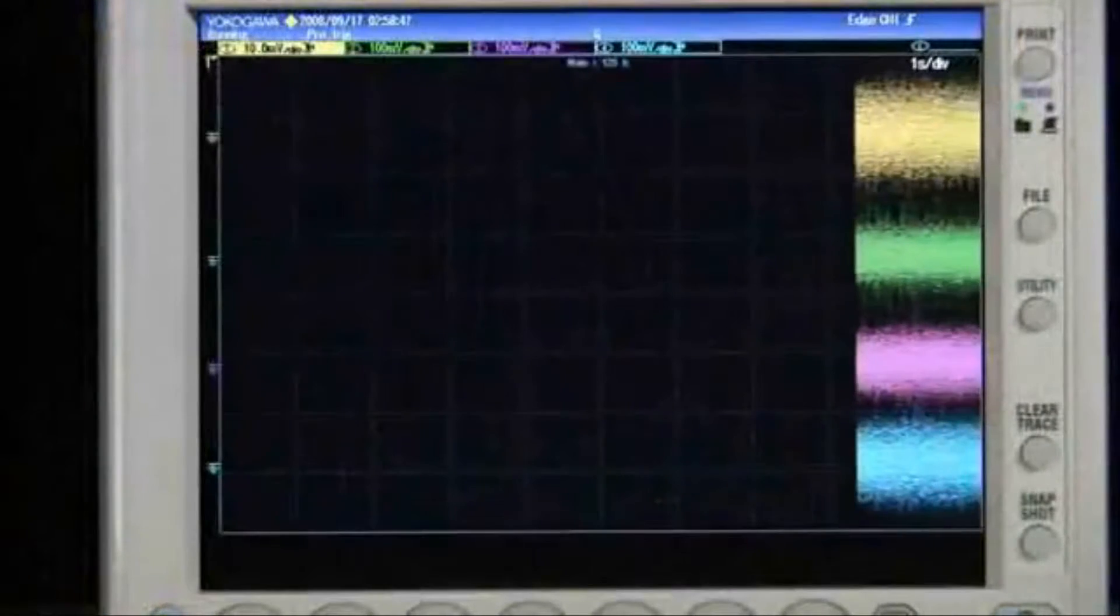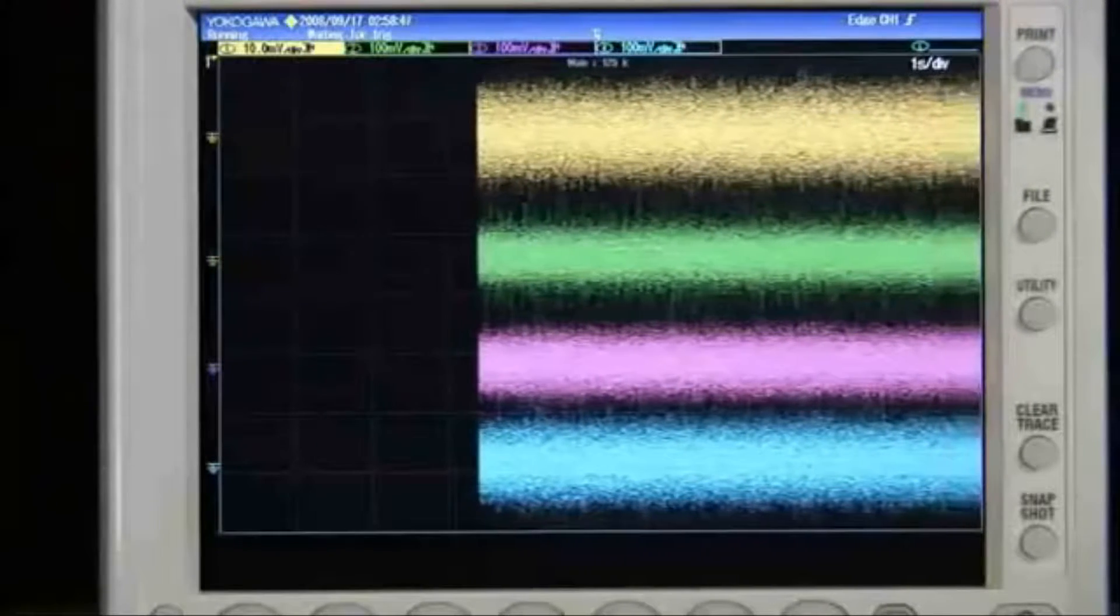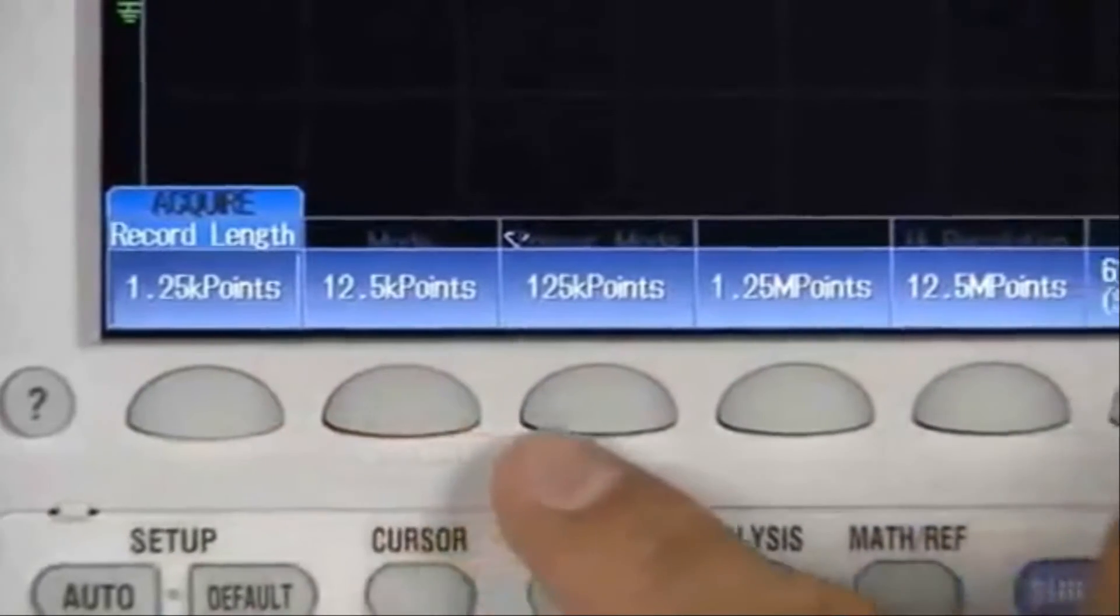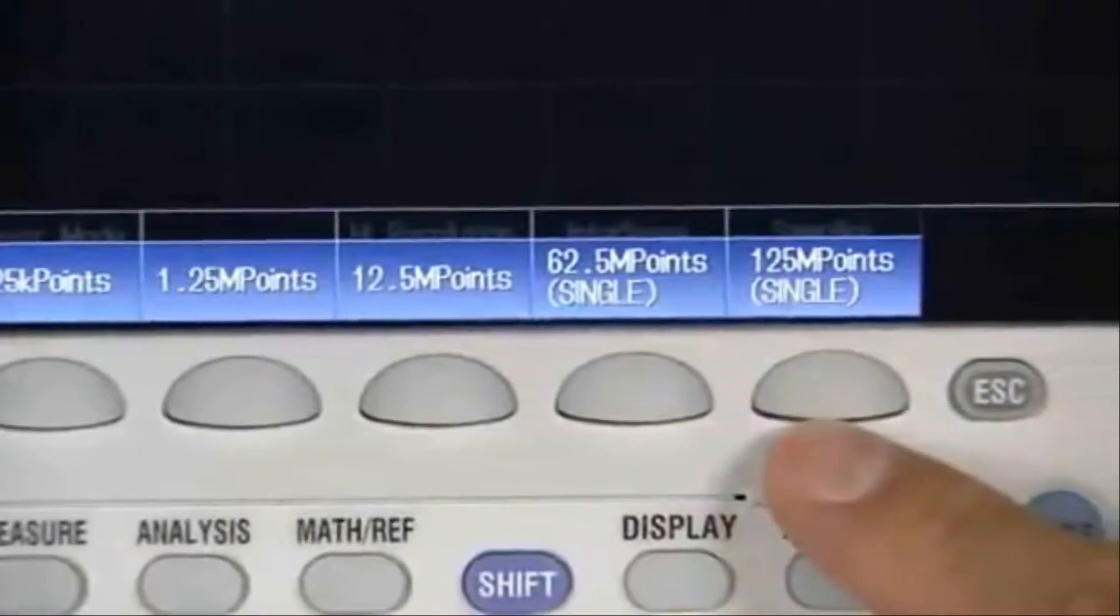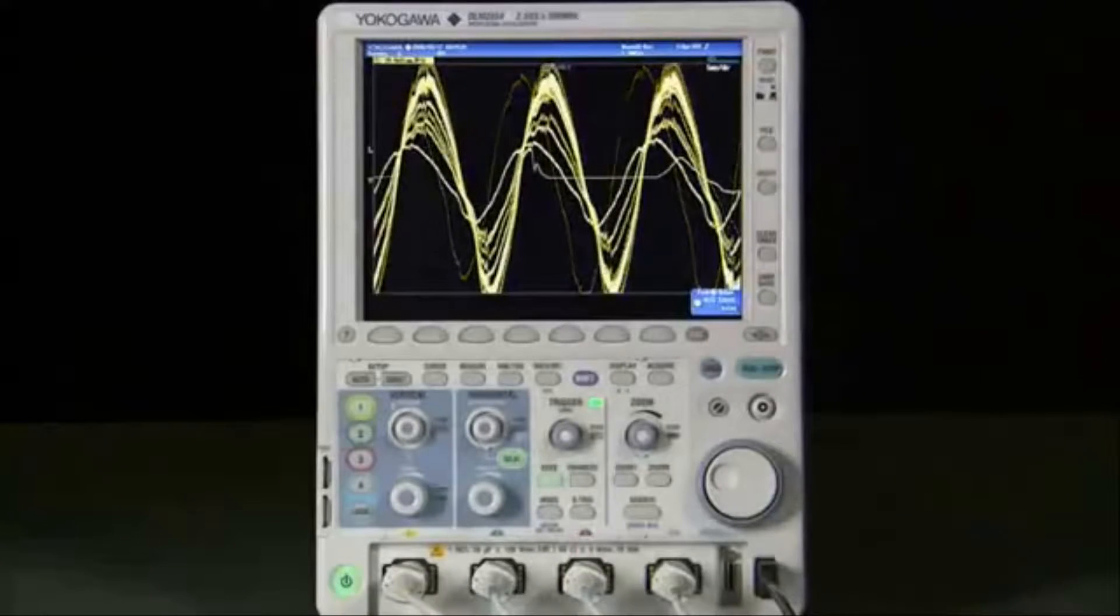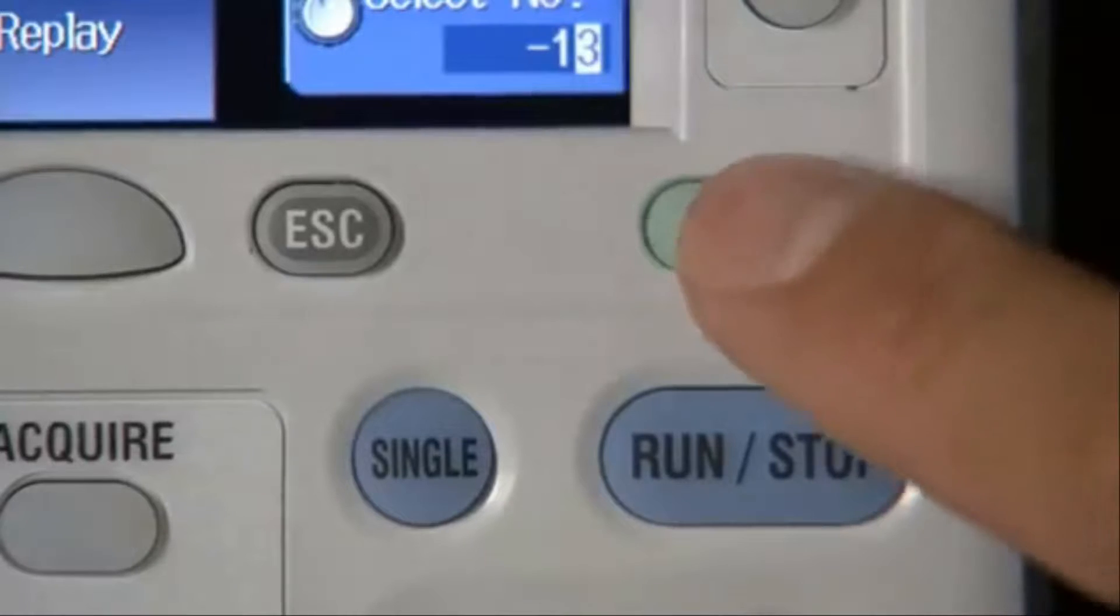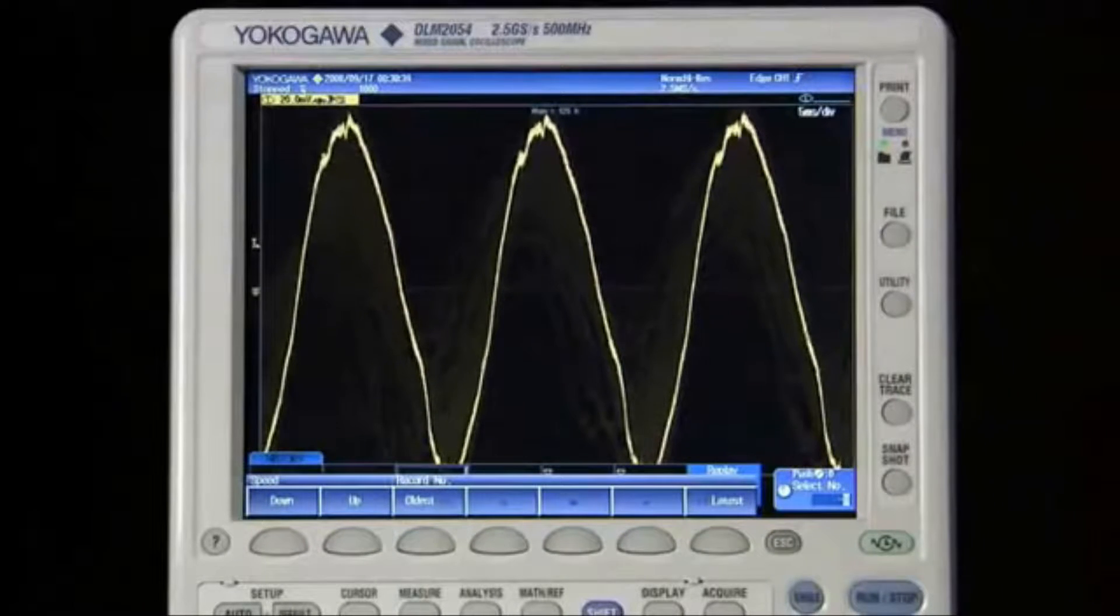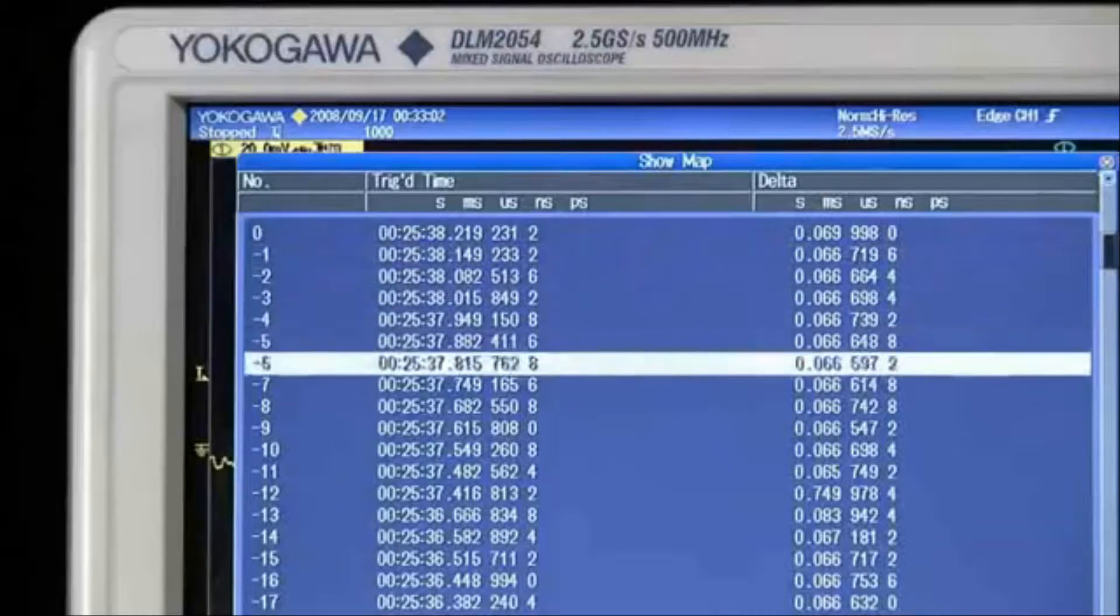An oscilloscope with long memory lets you maintain high sample rates for longer observation times. And the DLM2000 sets the bar in its class, with up to 125 million points. And when you're not using the entire memory in a single shot, Yokogawa's exclusive History Memory feature will automatically segment and preserve thousands of waveforms, including timestamp information.